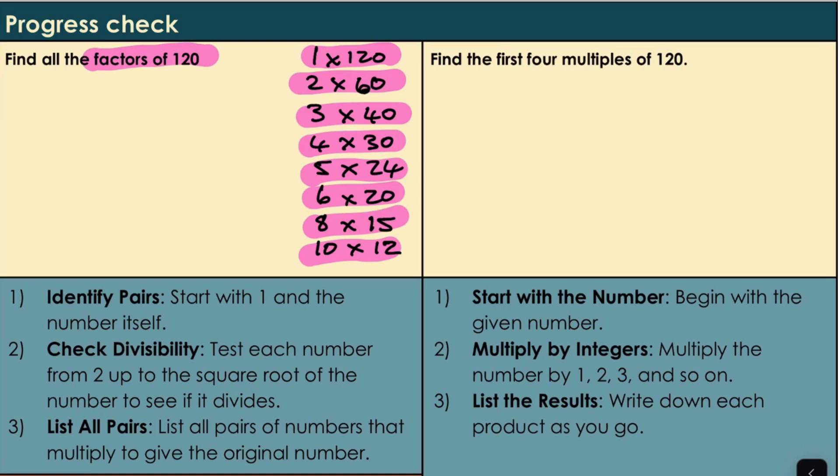Next question. First four multiples of 120. We start with the number 120. That's our first multiple of 120 because 120 multiplied by 1 is 120. Then 120 multiplied by 2 multiplied by 3 multiplied by 4. And there we have our first four multiples of 120.